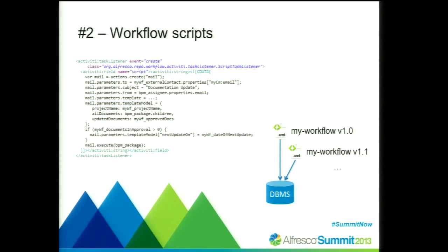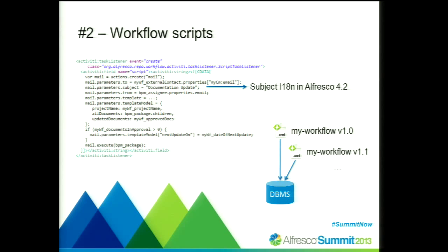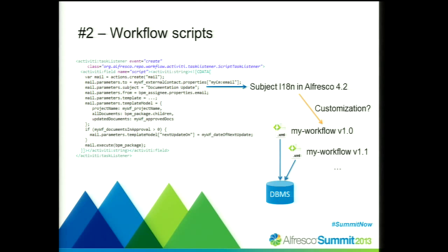Let's say we want to use additional functionality made available by an Alfresco version update and apply it to all existing workflows without going into the database and modifying the stored source code. For example, in Alfresco 4.2 there's a new feature where you can provide a message key as the subject of the email action to have the email automatically use a localized subject message — which was not possible before. So we might want to replace this hard-coded subject with a message key for all existing workflow versions. But how would we customize the existing workflow in the database without modifying the database itself? Unfortunately, it's not even stored in plain text — it's stored in a binary format, making it essentially impossible to modify after the workflow has been installed.